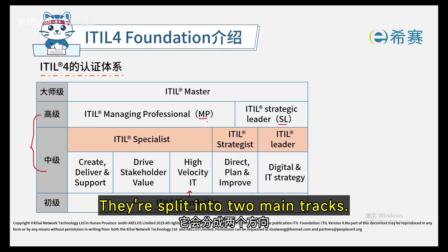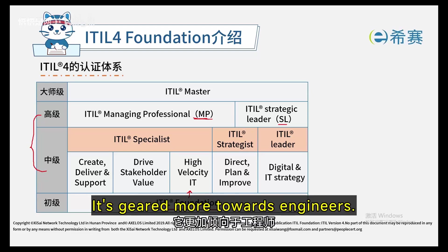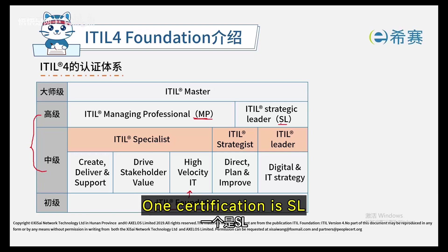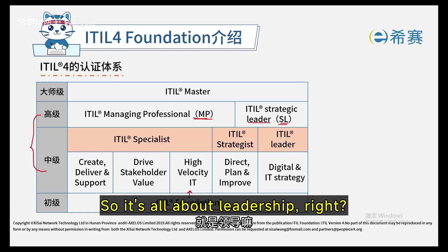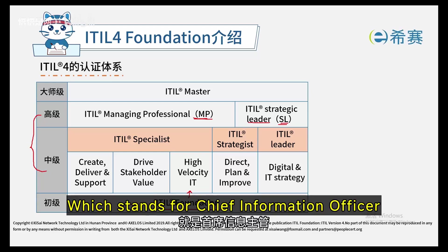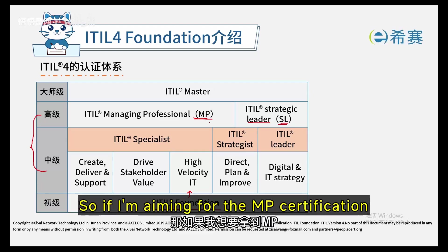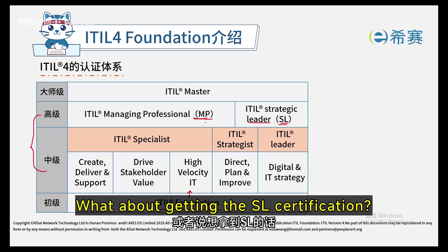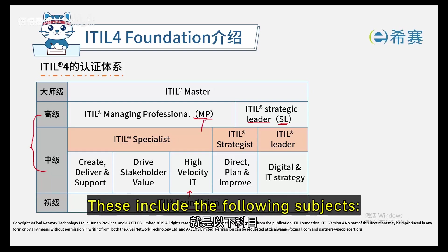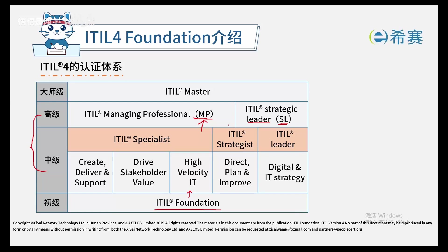They're split into two main tracks. One track is MP, or Management Professional, which focuses on management skills — geared more towards engineers or managerial positions. The other certification is SL, Strategic Leader, which is all about leadership — geared more towards IT directors or CIOs, which stands for Chief Information Officer. These top-level executives — it's designed for their learning and development. If you're aiming for the MP certification or the SL certification, it's not just one exam. You'll need to pass several exams. Once you've passed them all, you can then apply for the MP or SL certification.